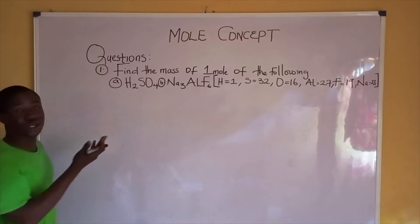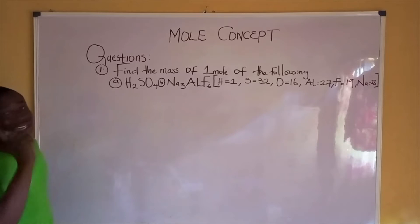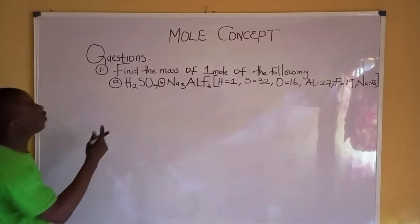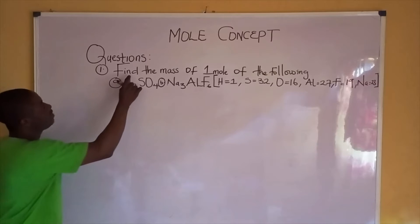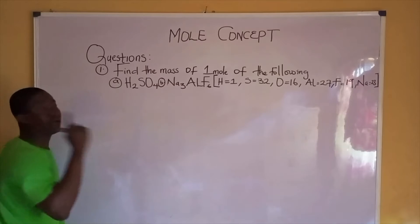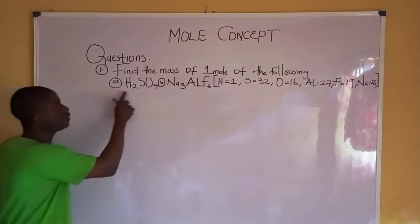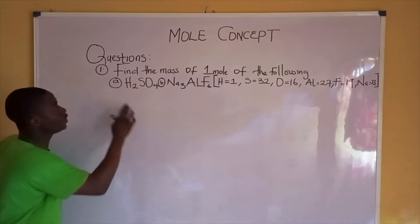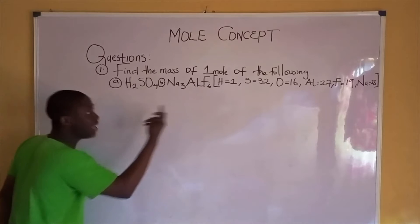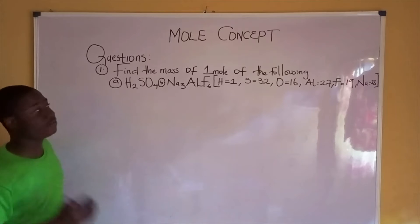You can see the first question written on the board. The question says: find the mass of one mole of the following — A: H₂SO₄, and B: Na₃AlF₆.